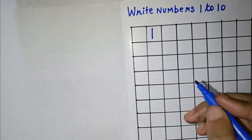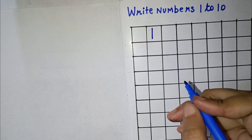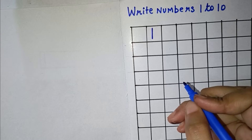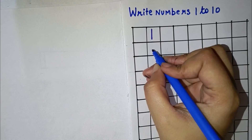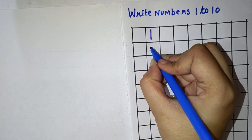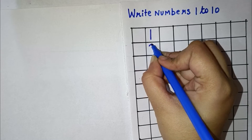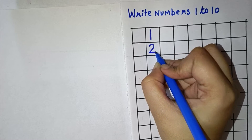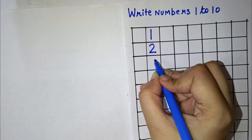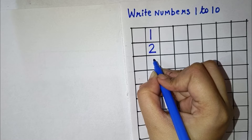Now the next number here is 2. So for 2, we have to draw a right curve and a sleeping line. This makes number 2.